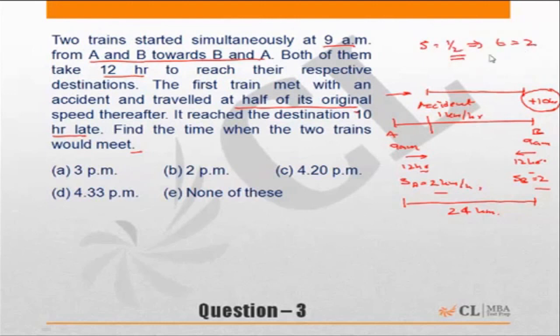So if the speed has become half, time has to become twice. That means this distance over which the train has delayed itself by 10 hours, it should have covered this distance also in 10 hours. But it has now covered it in 10 plus 10, 20 hours. Since the speed has become half, the time taken has become twice.